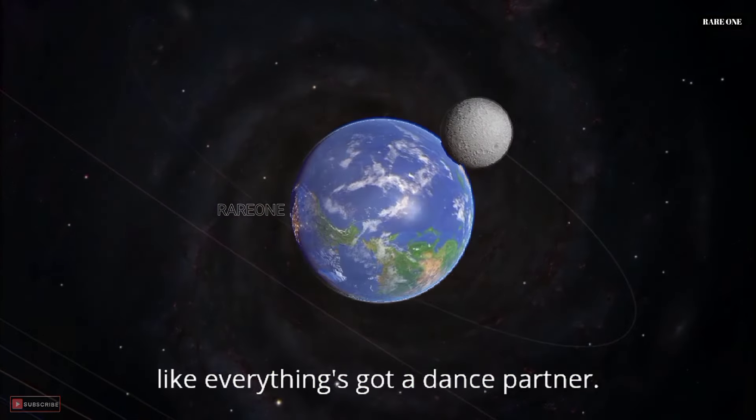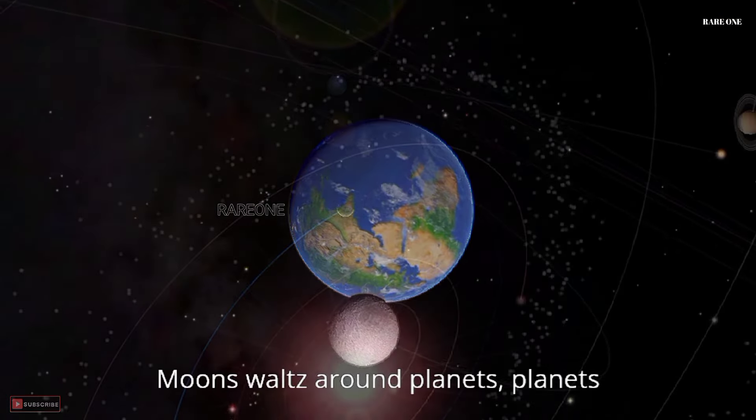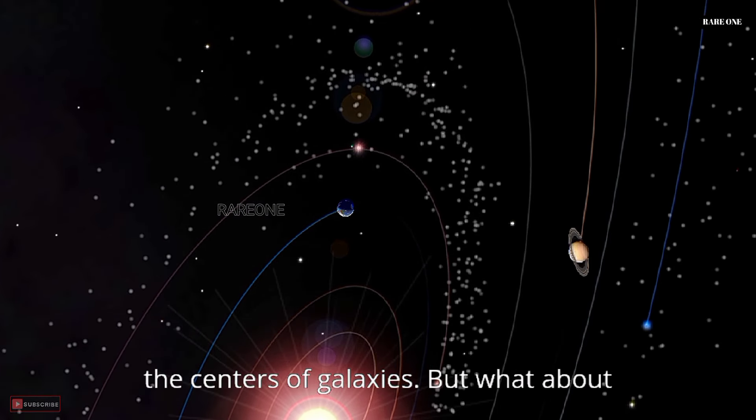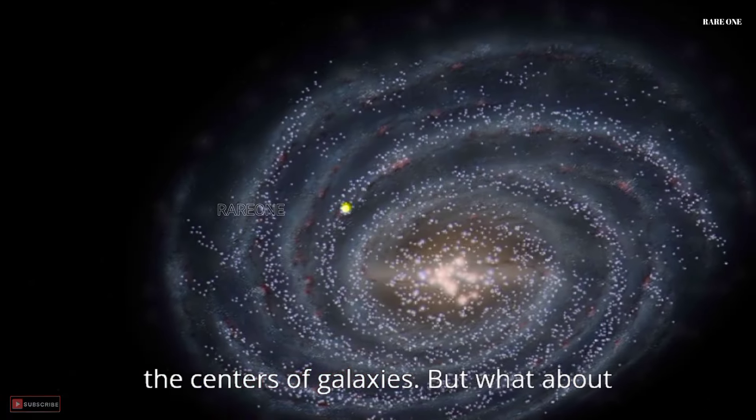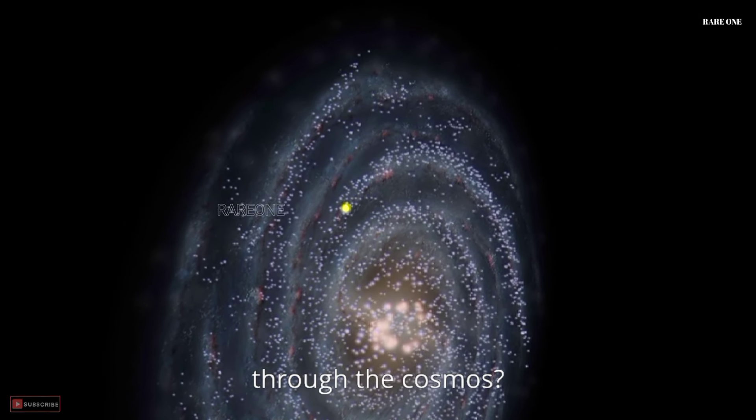In space, it seems like everything's got a dance partner. Moons waltz around planets, planets tangle with stars, and stars twirl around the centers of galaxies. But what about galaxies themselves? Do they have a partner, or do they just freestyle through the cosmos?